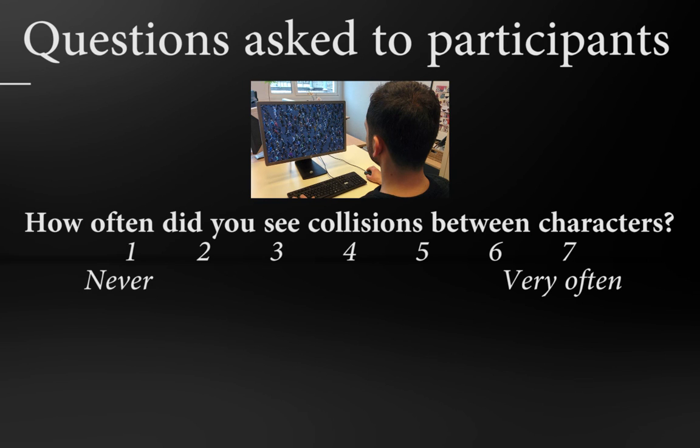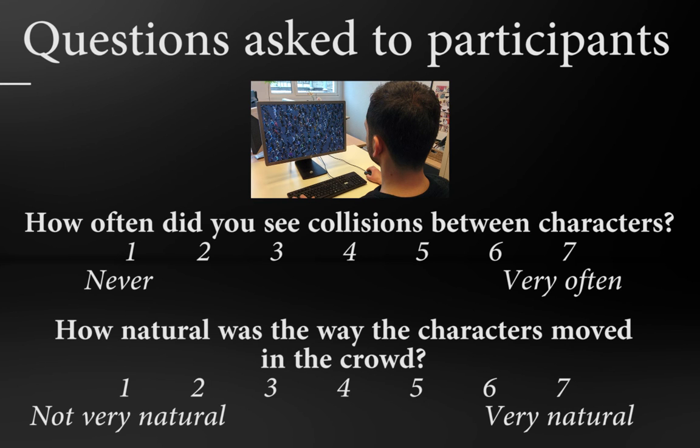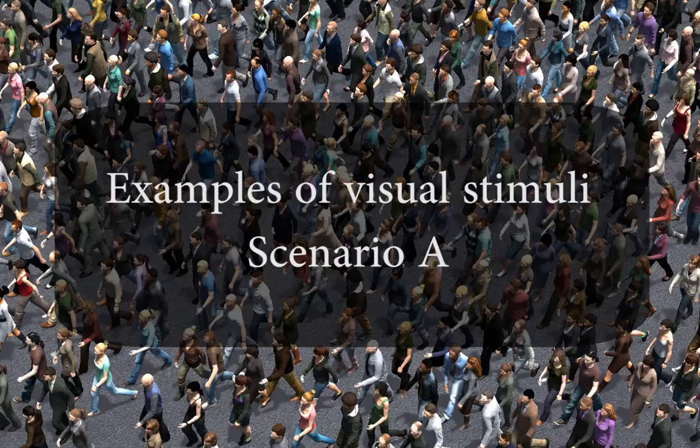How often did you see collisions between characters? And how natural was the way the characters moved in the crowd? Here are some examples of stimuli.